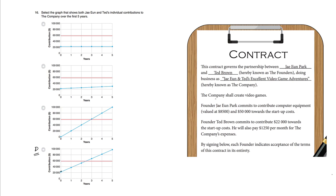As you can see, Jae contributed $50,000 plus some computer equipment worth $8,500. So that's $58,500, which is just under $60,000. This red line here.